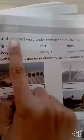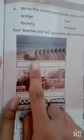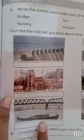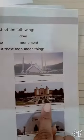Now we are going to do an exercise. Come to page number 77. Our first question is: write the correct word under each of the following. First one is dam, second one is factory, third one is bridge, fourth one is mosque, fifth one is fort, and sixth one is a monument.